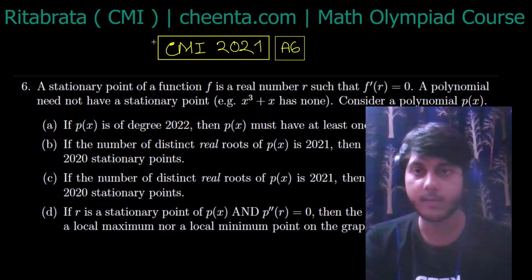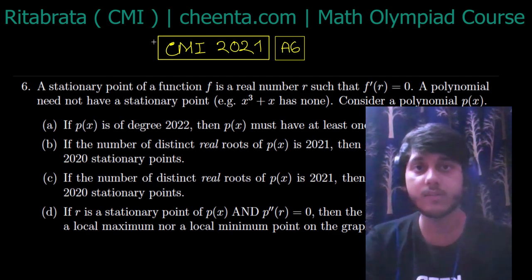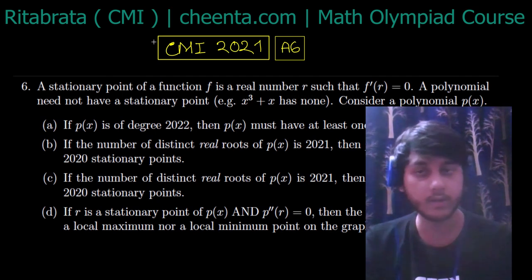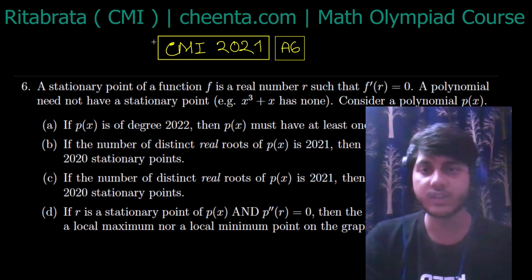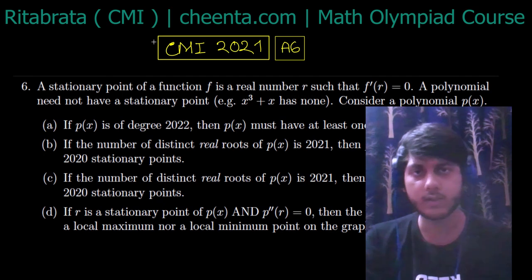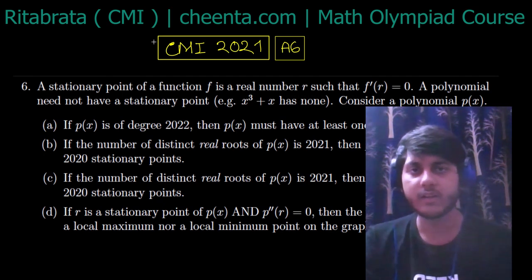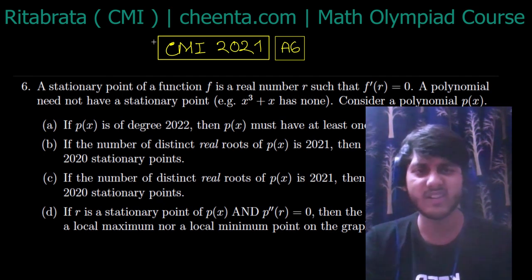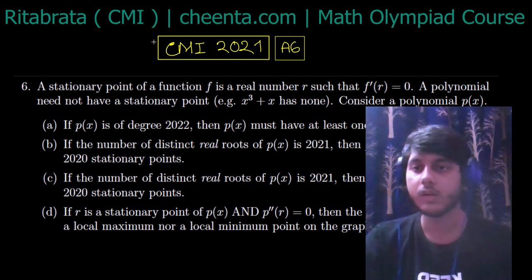In the question, we define the stationary point and the derivative of the given function. We also consider where there is no stationary point. Mainly, a strictly increasing and strictly decreasing function generally has no stationary point.